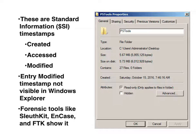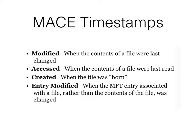The standard information timestamps are what you see if you do Properties on a file in Windows — created, modified, and accessed. The entry-modified timestamp, which indicates when the MFT metadata itself was changed, is not visible there but forensic tools will show all four timestamps. Created is when the file was first created, accessed is when it was last read, modified is when it was last changed, and entry modified is when the MFT entry itself was changed.